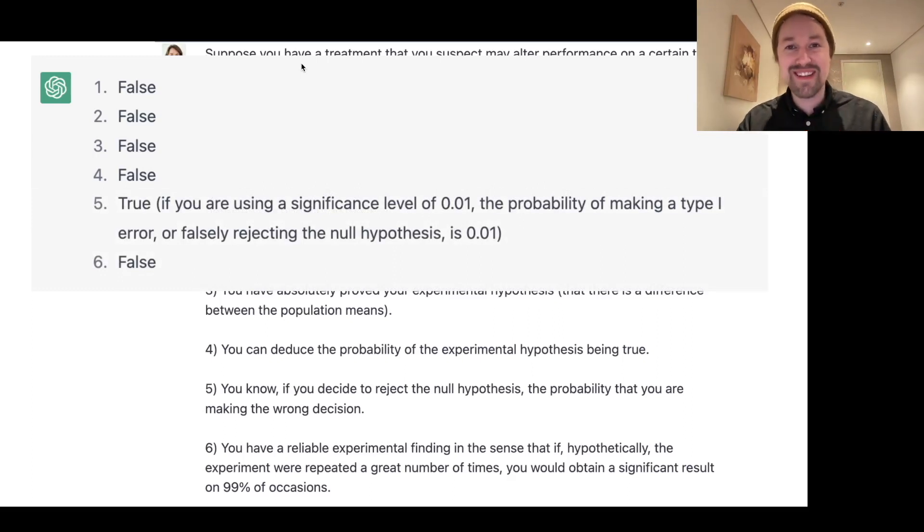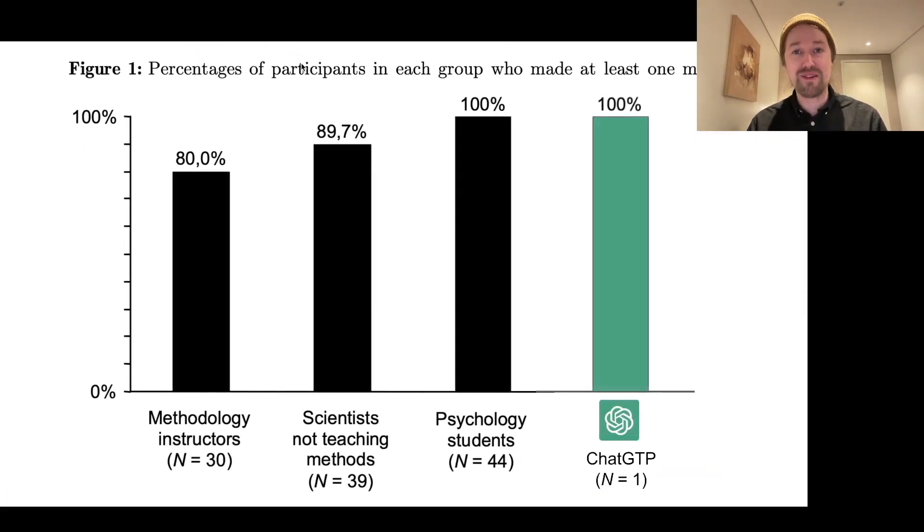If you're using a significant level of 0.01, the probability of making a type 1 error or falsely rejecting a null hypothesis is 0.01. ChatGPT is here completely forgetting about the base rate of the hypothesis being true. So, unfortunately for ChatGPT, it doesn't do very well on p-values.